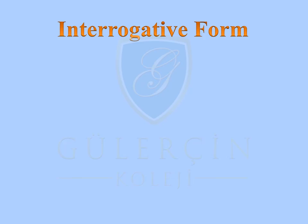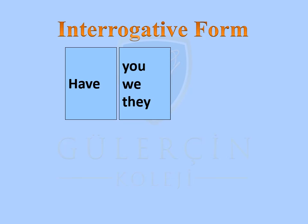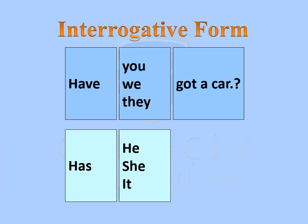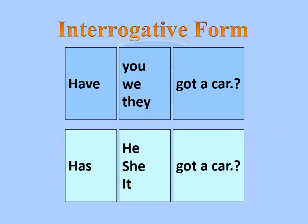Let's have a look at the interrogative form. Have you got a car? Have we got a car? Have they got a car? Has he got a car? Has she got a car? Has it got a car?